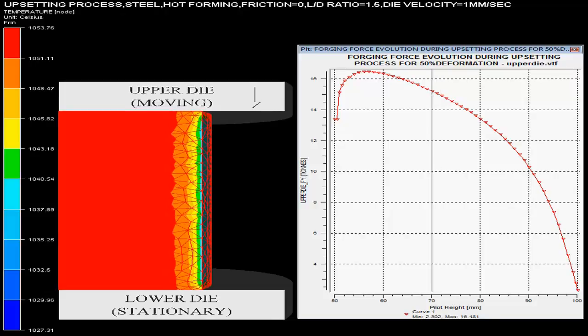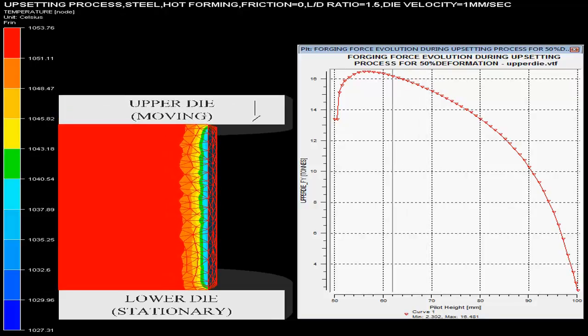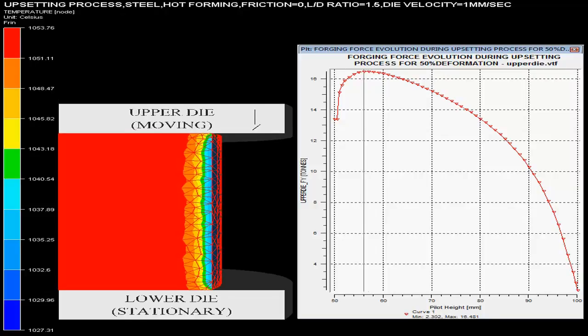Zero friction for billet and dies is shown on the top and in the video. The upper die presses with the velocity of 1 mm per second with the lower die stationary.